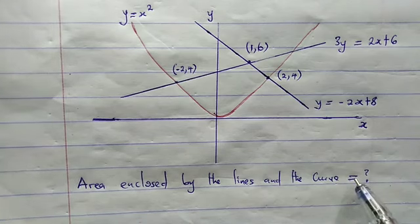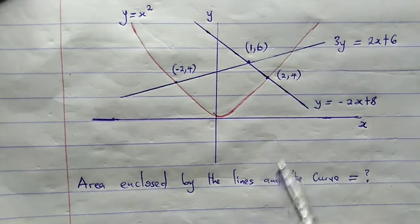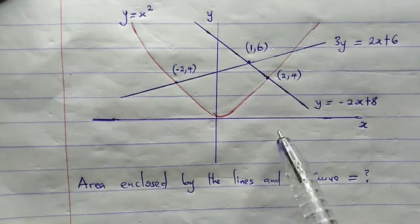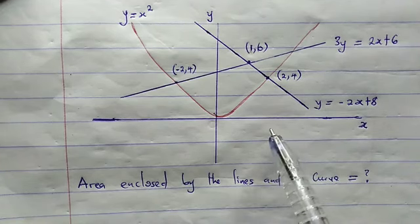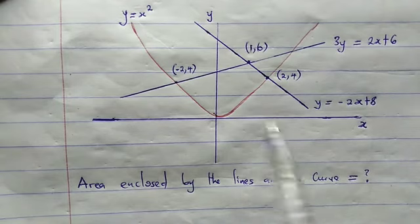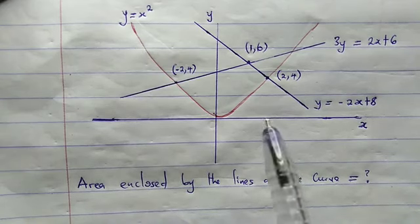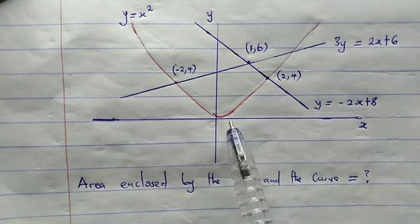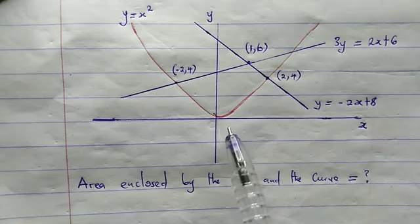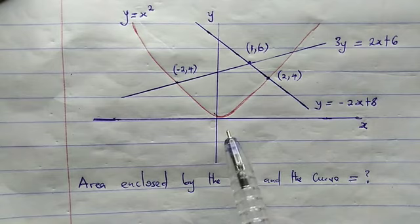Actually, the graph looks very complicated — it involves two different lines and a curve, or a parabola. As we can see, y is equal to x squared. Now let us quickly go to the solution to this problem. I'll be making use of integral calculus.